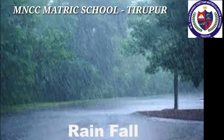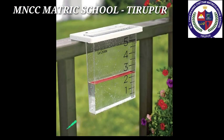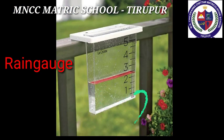Rainfall: rain is liquid water in the form of droplets that have condensed from atmospheric water vapour and then became heavy enough to fall under gravity. Rain is a major component of the water cycle. Rainfall is measured by an instrument called a rain gauge.